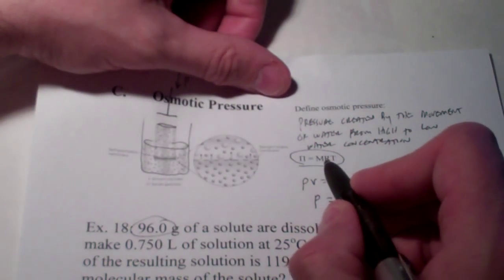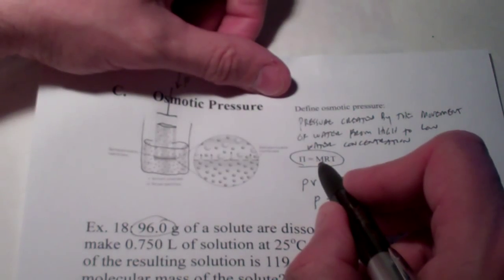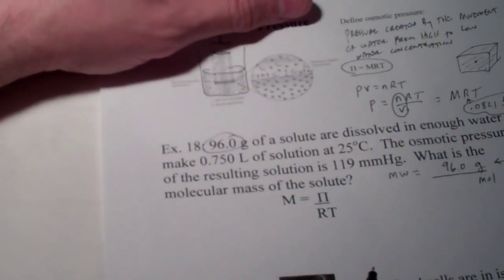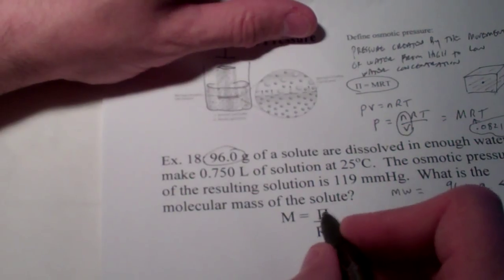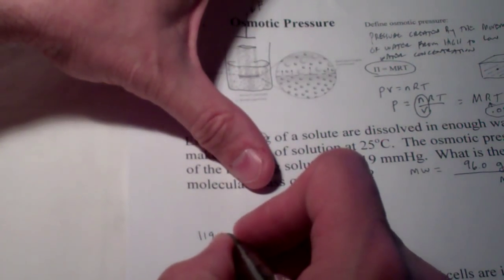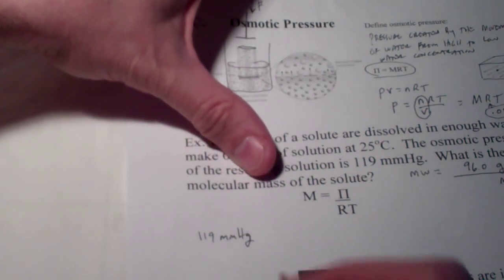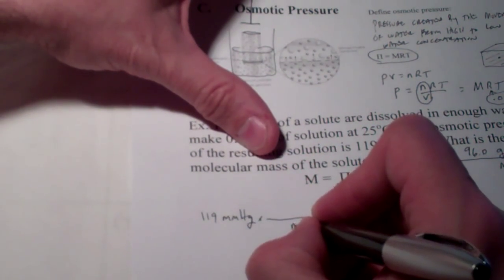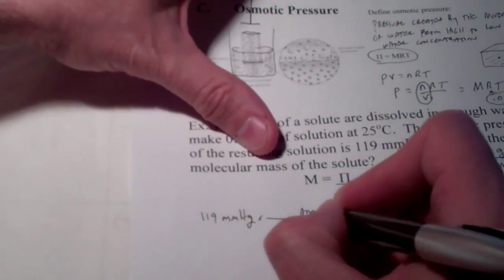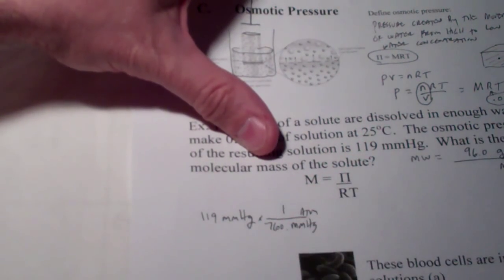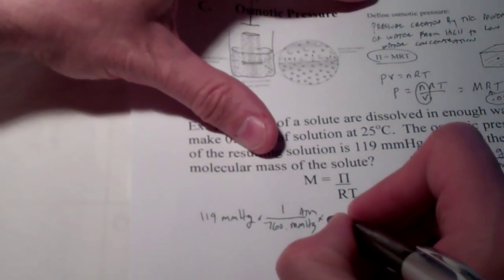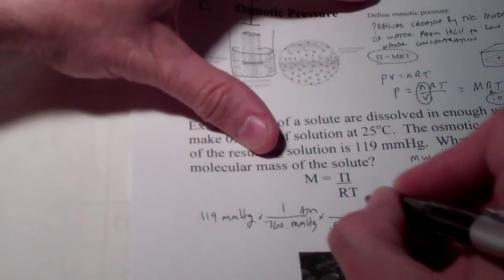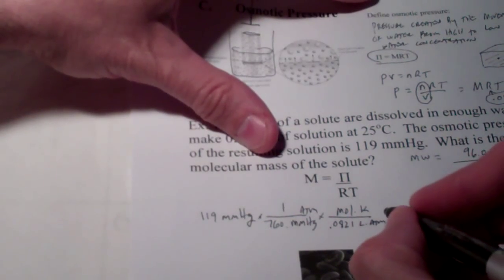So, I'll use our osmotic pressure equation. Which part of this will allow me to solve for moles? If you said molarity, you are correct. Molarity is equal to the osmotic pressure divided by RT. So, let's do that. My osmotic pressure is 119 millimeters of mercury. Now, if you remember, we don't like millimeters of mercury when we're using our ideal gas law constant, R. So, we're going to hop out of millimeters of mercury and get into atmospheres. One atmosphere is defined as 760 millimeters of mercury. Divided by R. Remember, 0.0821 liter atmospheres per mole Kelvin. Divided by T.